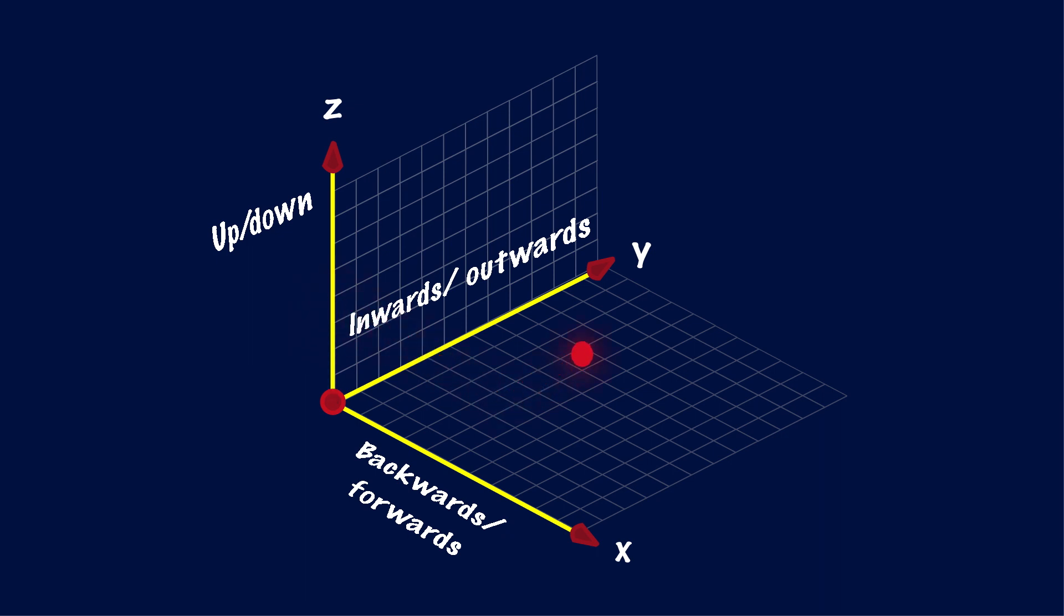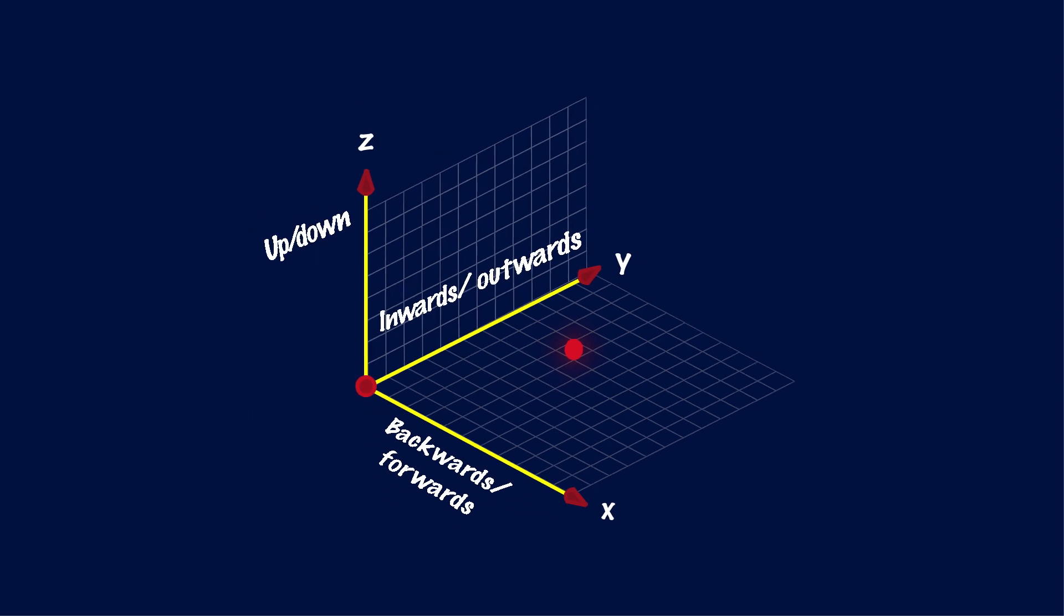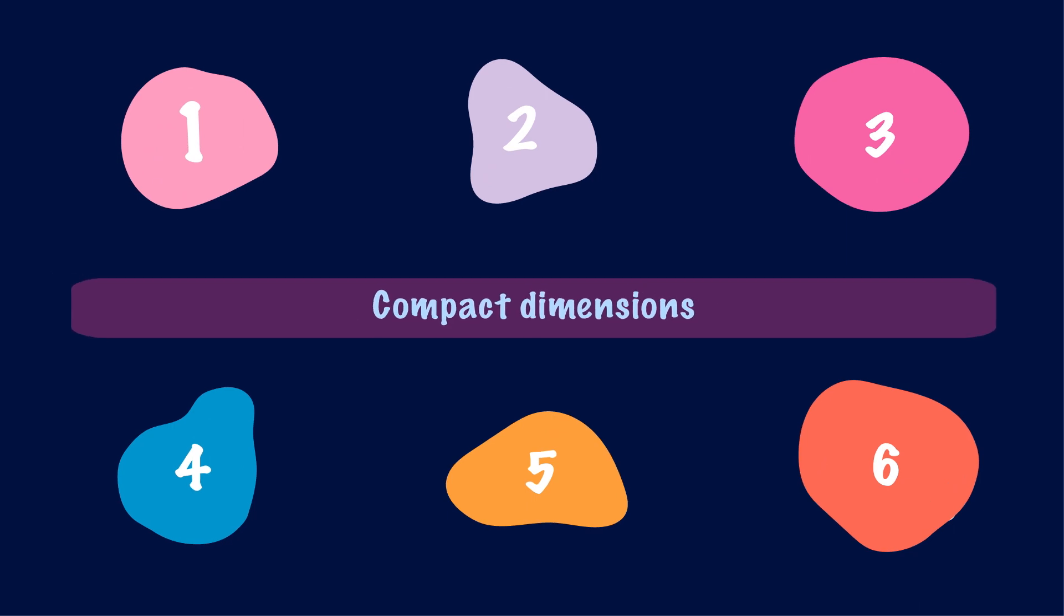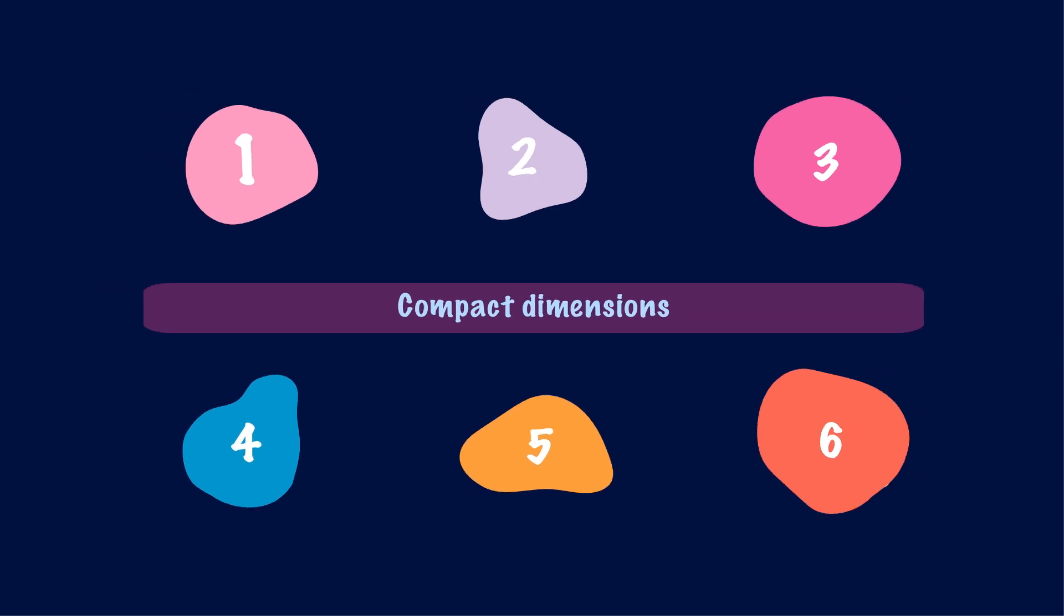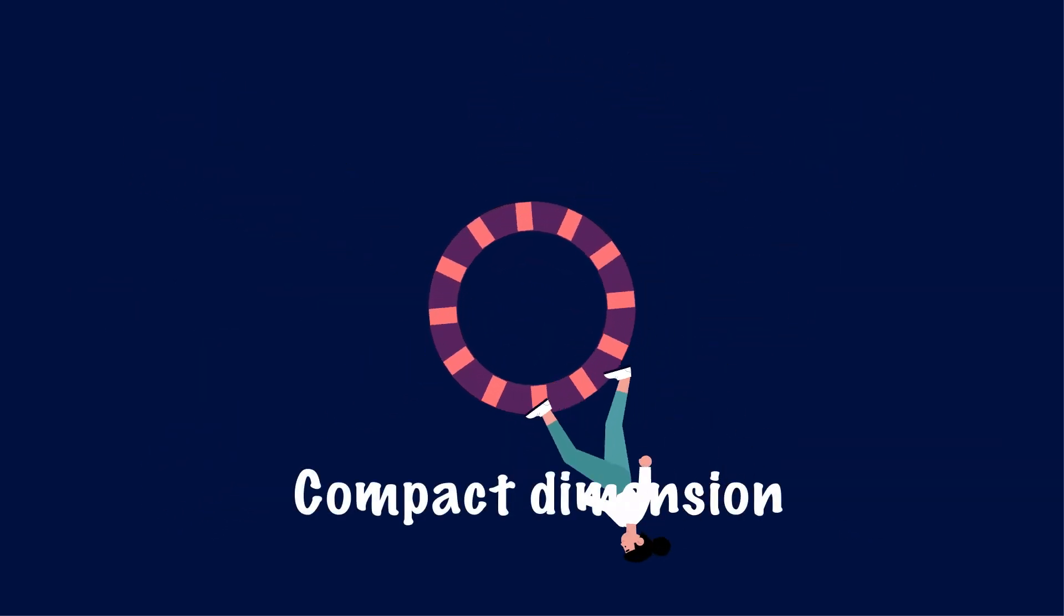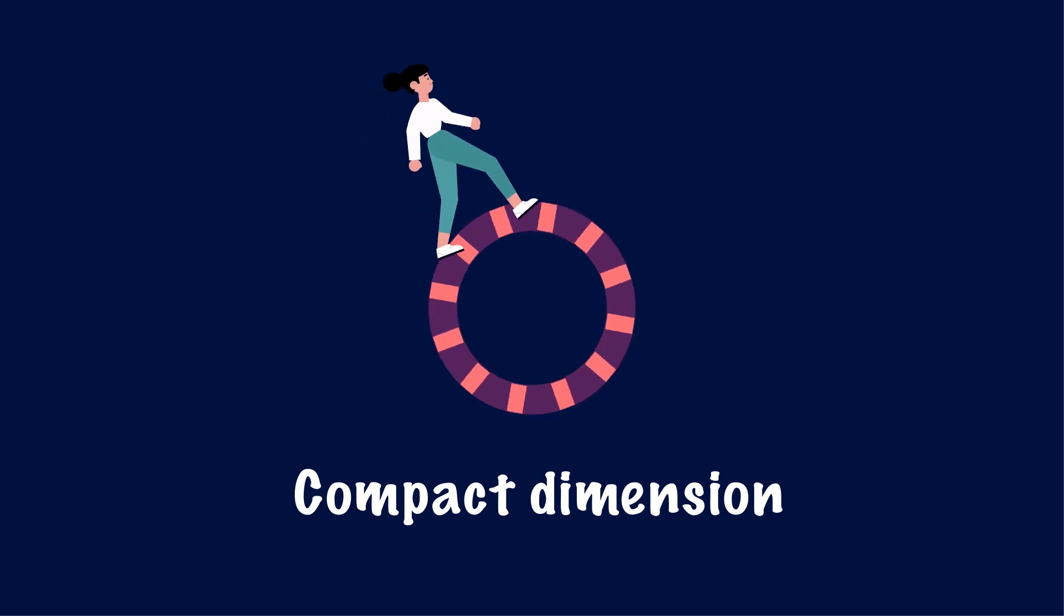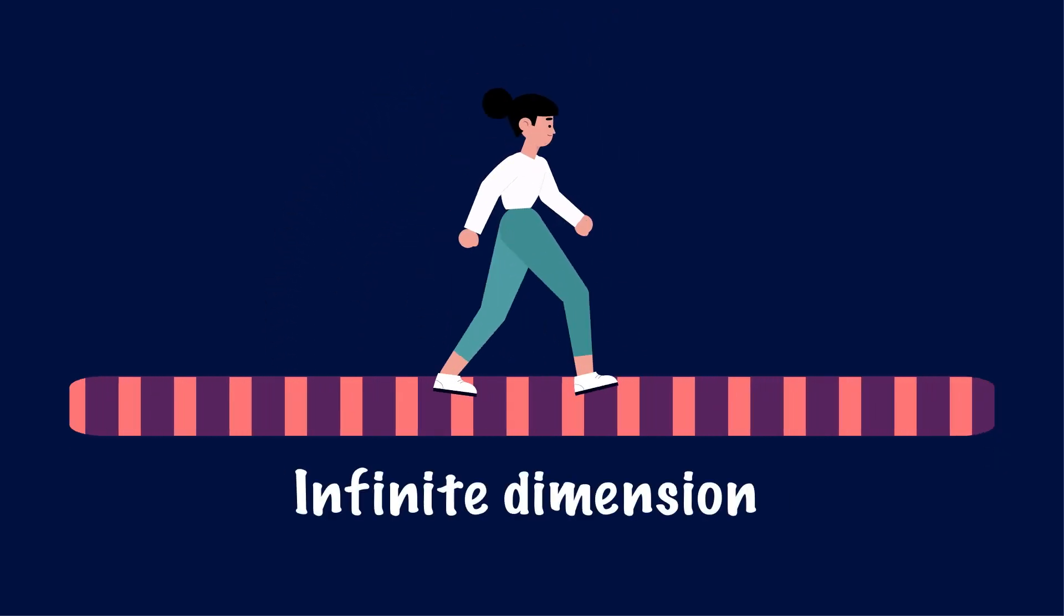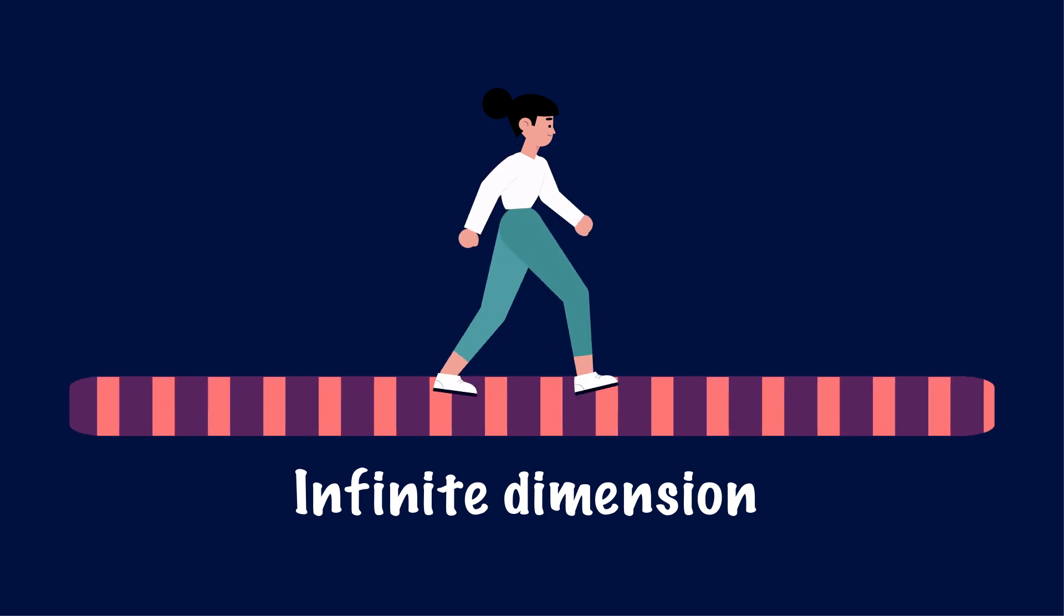These are known as the infinite dimensions. Super string theory only works in a universe with an additional 6 dimensions, called compact dimensions. These compact dimensions all lie within our known 3 dimensions of space. The difference between infinite and compact dimensions, is that when you travel along the compact dimensions, you always end up back where you started. Whereas with infinite dimensions, no matter how far you travel along that dimension, you will never end up back where you started.